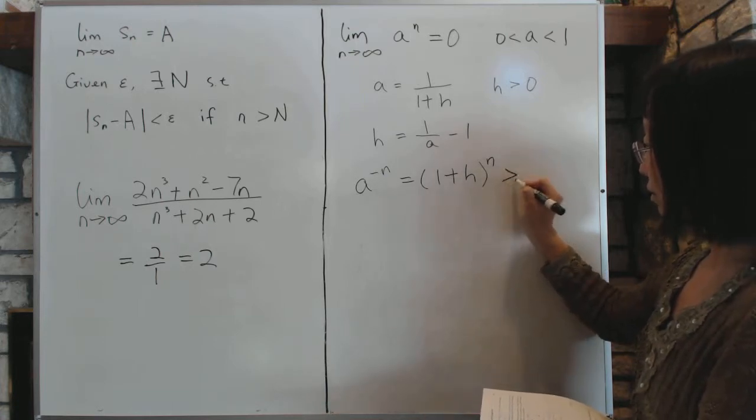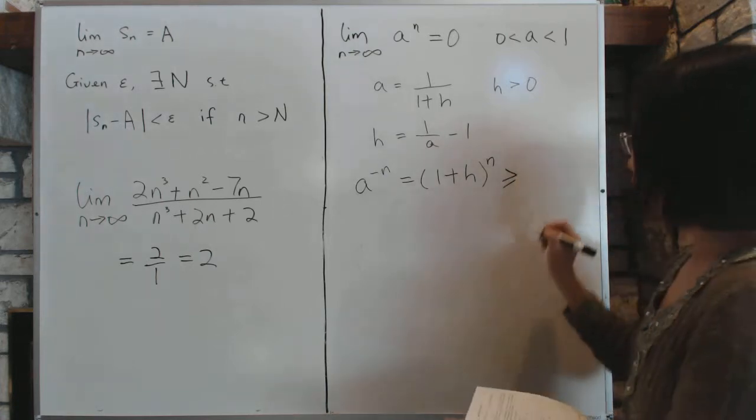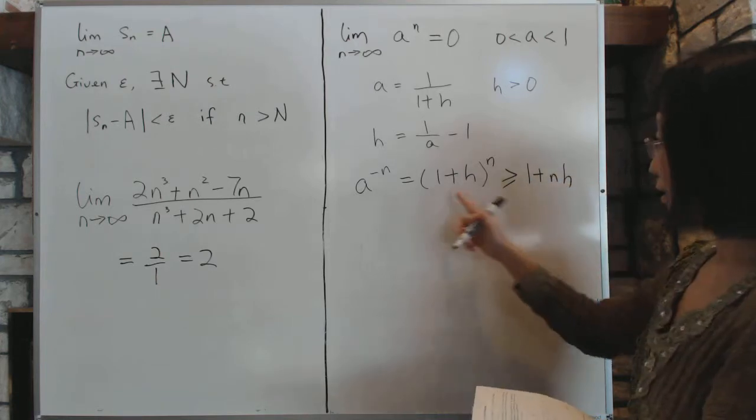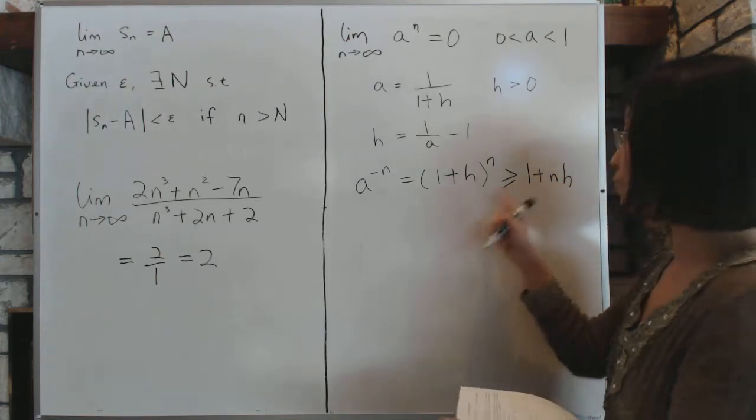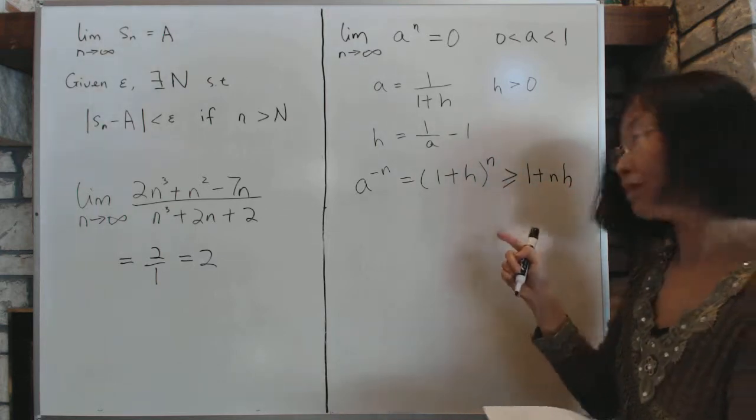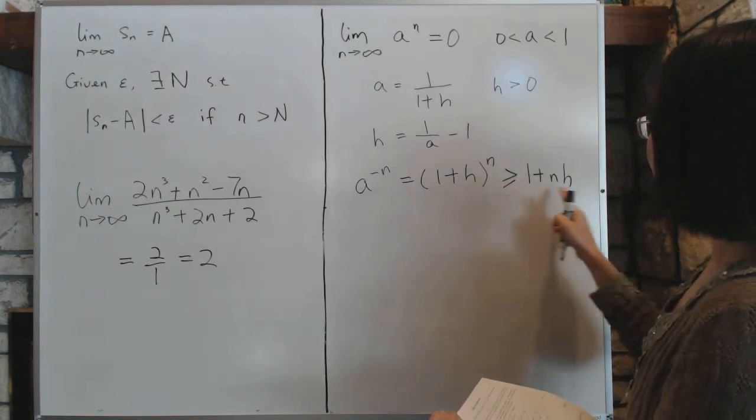And what is this? This, based on the earlier problem that we've done, is bigger than or equal to 1 plus nh. That's a very convenient relationship to memorize, because it takes the coefficient down to a more manageable level.